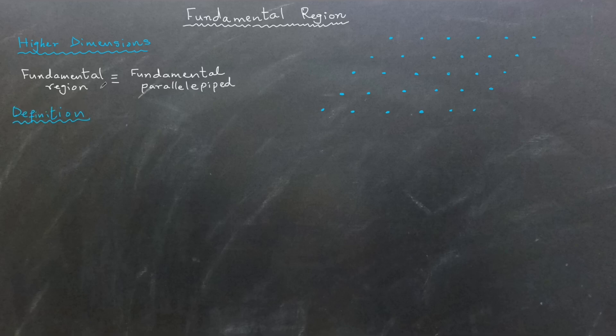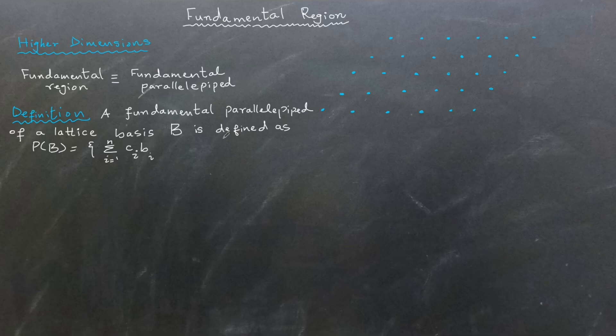A fundamental parallelepiped consists of all points that can be expressed as a linear combination of the lattice basis vectors, where the coefficients come from a half-open interval. The most common intervals are from negative 1/2 to positive 1/2, where the negative half is included but the positive half is excluded, and from 0 to 1, where 0 is included and 1 is excluded.